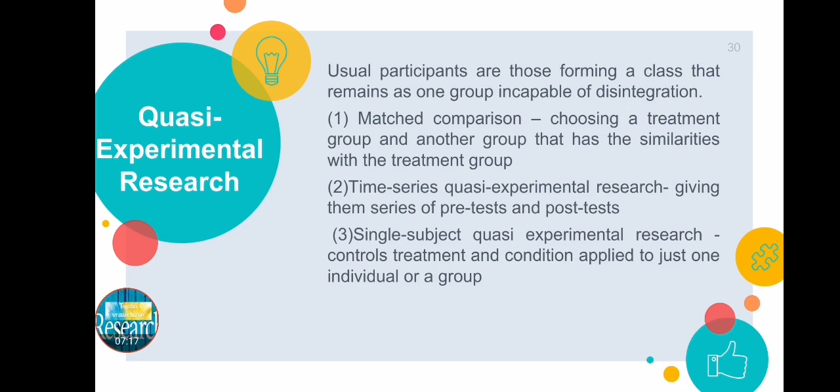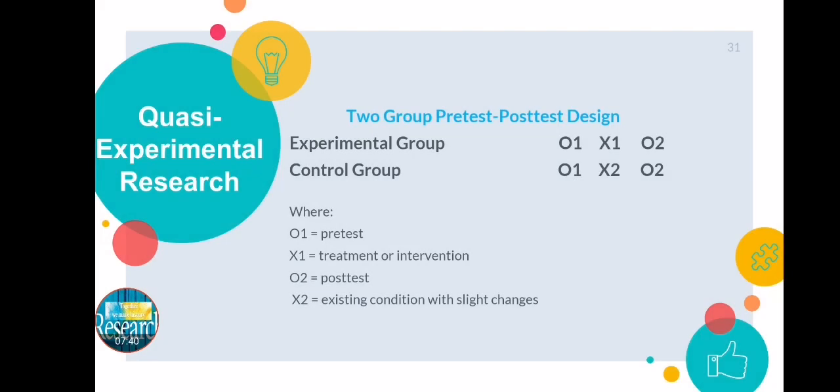So again, in quasi-experimental research there are three types that participants usually undergo: one is matched comparison, two is time series, and three is single subject.